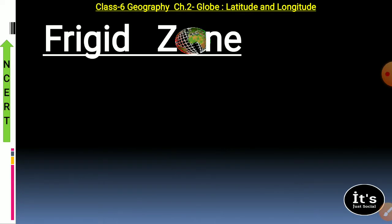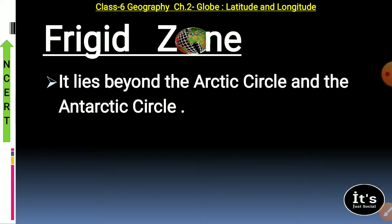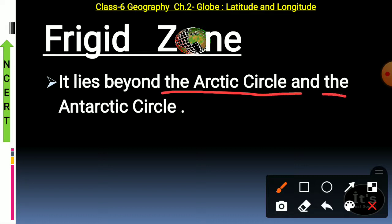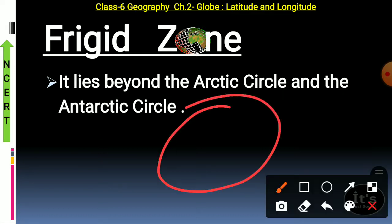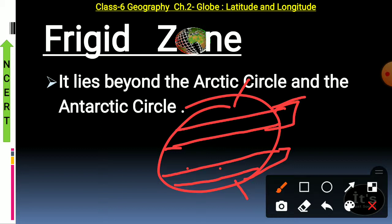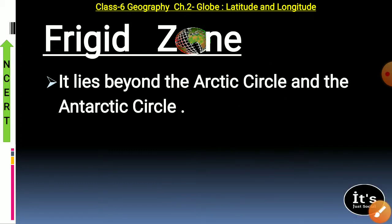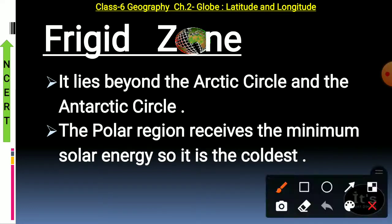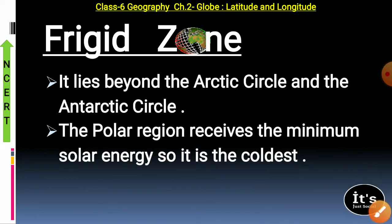Now let us understand the frigid zone. This zone lies beyond the Arctic Circle and the Antarctic Circle — from the Arctic Circle to the North Pole, and from the Antarctic Circle to the South Pole. Frigid means frozen — जमा हुआ — just like things remain frozen inside a fridge. This polar region receives the minimum solar energy, so it is the coldest. The sun's rays barely reach here, which is why it is the frigid zone.